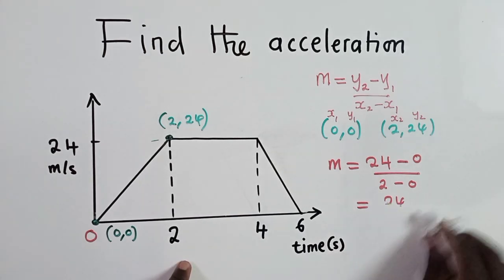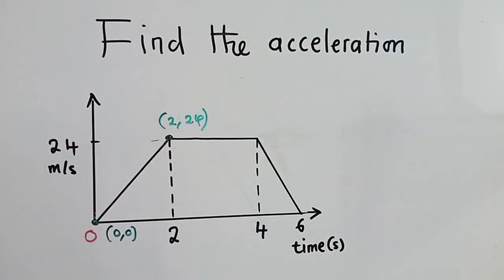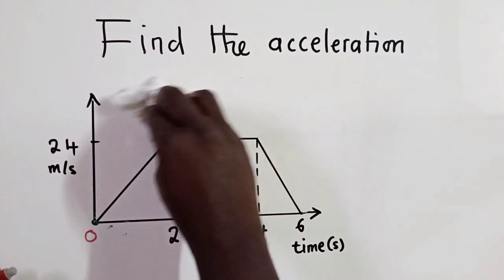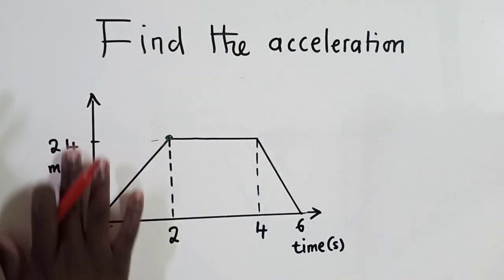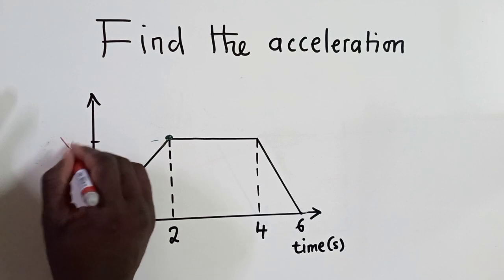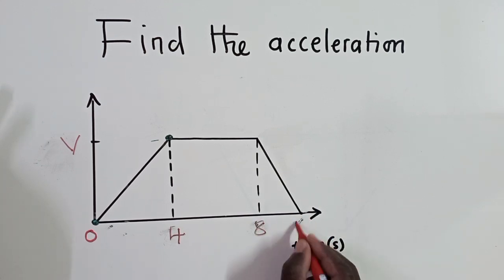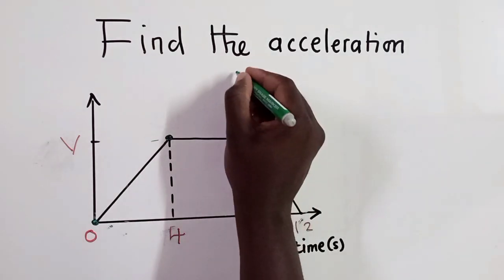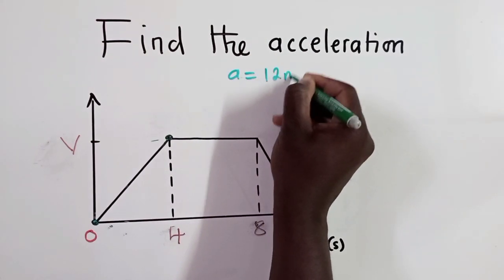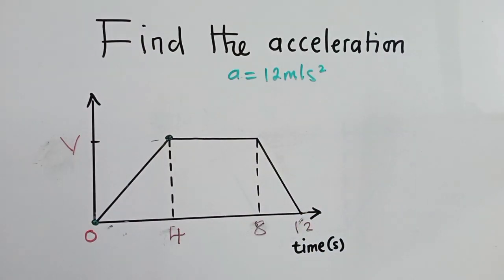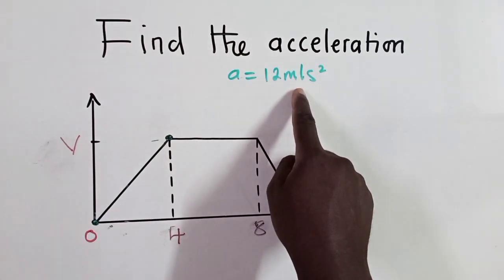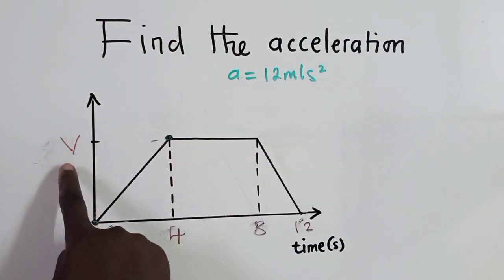So now, let's say you've been given the acceleration. Let's say we've been given the acceleration. And here, let's say here, we have a V. And we're looking for V. We've been given our acceleration. And let's say here it's 4 seconds, 8 here, and 12 here. So they've given us our acceleration. Let's say the acceleration is equal to, let me put it up here. So acceleration is equal to, let's say, 12 meters per second squared. They have given us the acceleration, which is 12 meters per second squared. And they want us to find the value of V.